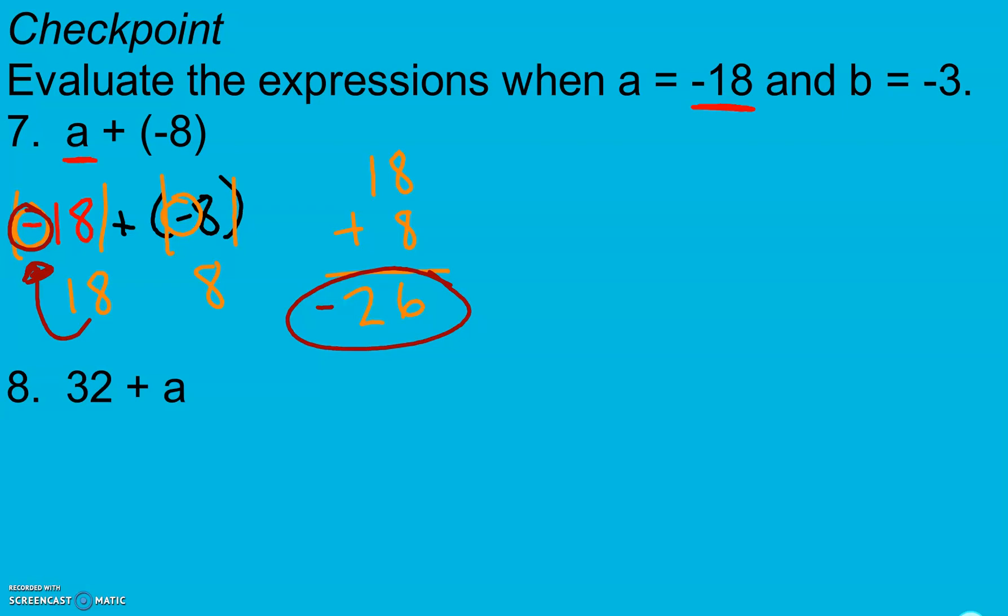Continuing on in section 1.5, go ahead and give number 8 a try. Here I have 32 plus a, and again, anytime we see an a, we're going to plug in a negative 18.